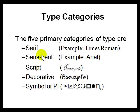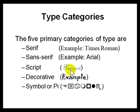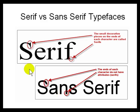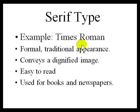Fonts are available in major categories. Serif fonts — like Times Roman — have a slight edge at the end of strokes like the letter T. Sans-serif is without those edges. Script fonts are the curly, handwriting-like style, but harder to read at small sizes. Decorative fonts have design elements around them, and symbol fonts include special symbols like pi. Times Roman is traditional, conveys dignity, and is easy to read, used for books and newspapers.